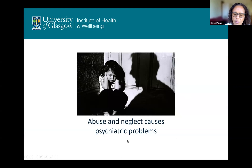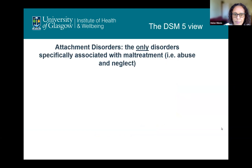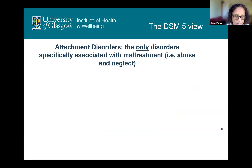I want to start with the obvious: abuse and neglect causes psychiatric problems, right? Actually, in the psychiatric classification system DSM-5, attachment disorders are the only two disorders that are specifically associated with maltreatment — in other words, abuse and neglect.